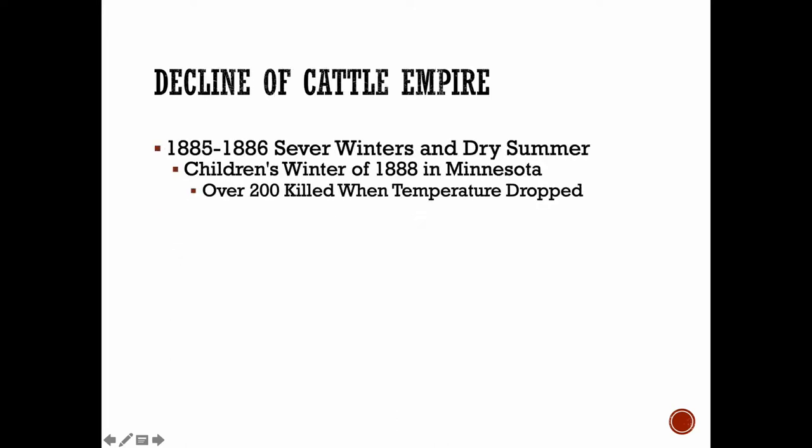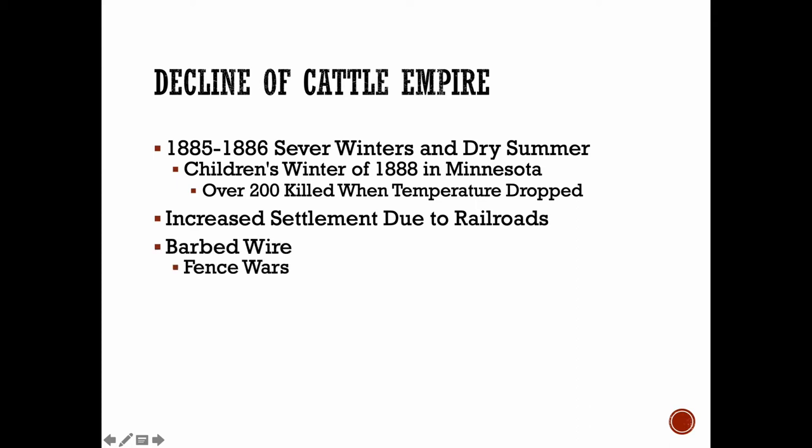The cattle empire declined largely because of severe winters and droughts in the summers, most especially 1885–1886. Another example is the Children's Blizzard in 1888, when between 200 and 500 people were killed when temperatures dropped rapidly — many of these were children walking home from school. More and more people were moving into the West because of the railroads, and this ended the free-range cattle markets. There was more fencing and barbed wire, so cattle couldn't just roam freely anymore, and the trail drives became obsolete.